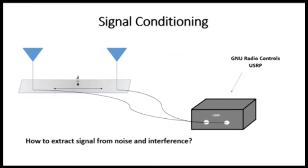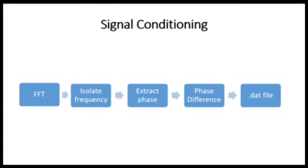The biggest problem is extracting the desired signal from noise and interference. The FFT is used to split the signal into its different frequency components. Once this is done, the frequency of interest is isolated and the phase information extracted. The phase difference is then calculated and exported to a .dat file.